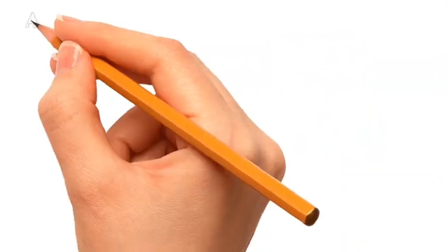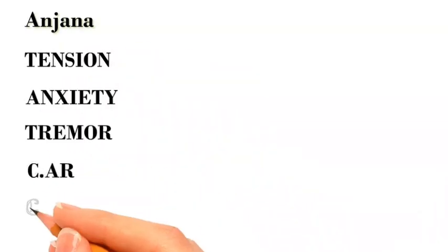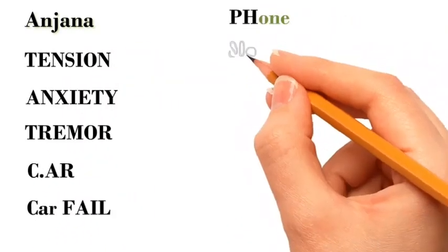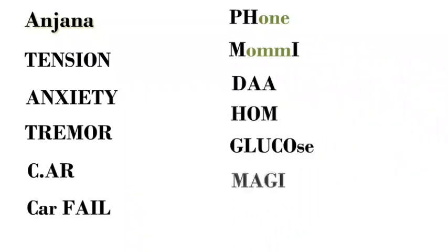We shall see again. Anjana is tensed, anxious and has tremors. As her car failed, she calls her mummy with her phone. Mummy says, Da, come home, Glukos and Maggie, Tara. The uses are,